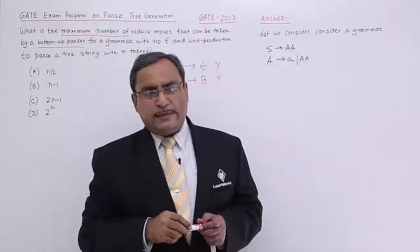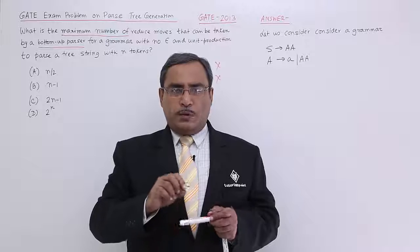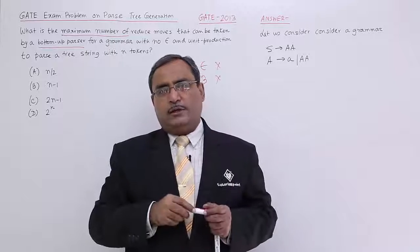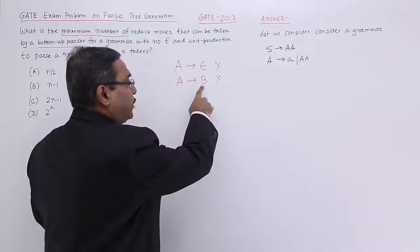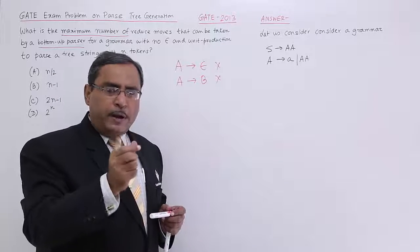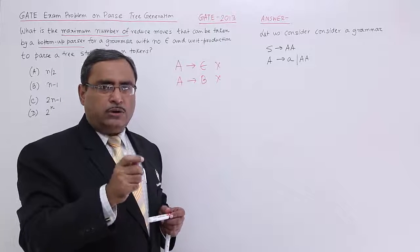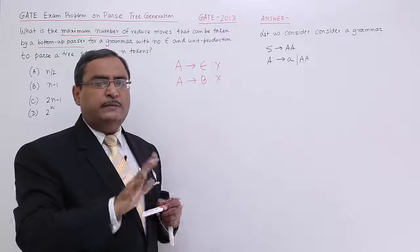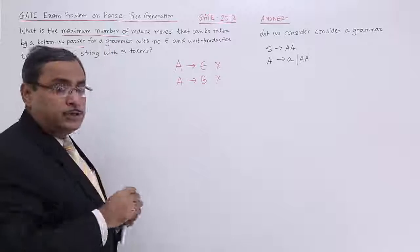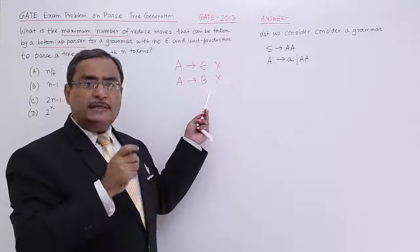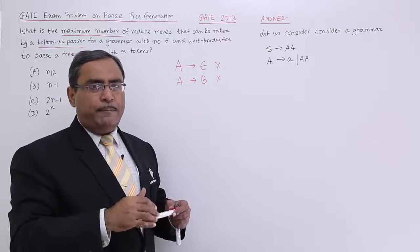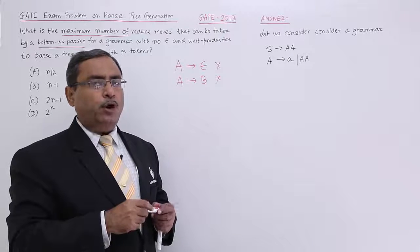As it is a bottom-up parser, we take the leaf nodes and try to reach S. Since unit productions are not allowed, on the right-hand side I will use the minimum number of grammar symbols — terminals or non-terminals — so that I require the maximum number of reduce moves. I will keep the right-hand side as short as possible to apply the maximum number of reductions.